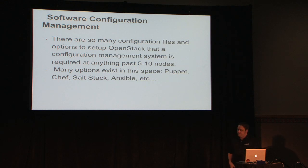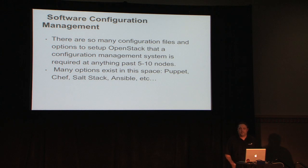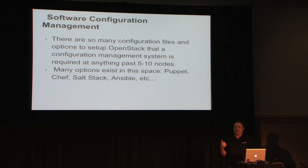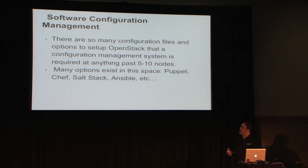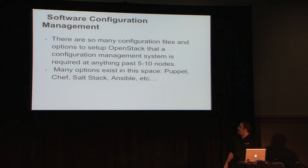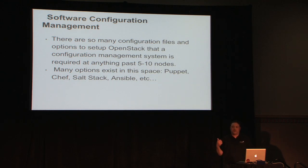Software configuration management. In Nova there are somewhere around 2,000 options to configure Nova — about 600 of them are useful. You're going to need some way to manage this across all your nodes, because your nova.conf, your API paste, your logging conf, and your policy JSON have to be on every node. If you're not running a consistent configuration management system, you're going to be SSH-ing a lot and typing the same commands over and over. We do recommend using some sort of configuration management. We have chosen Chef, but there are many options.